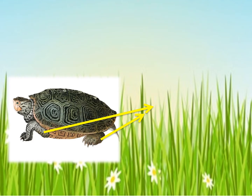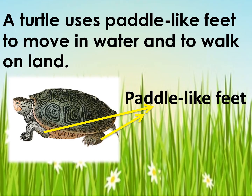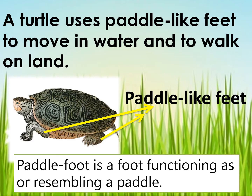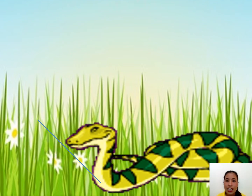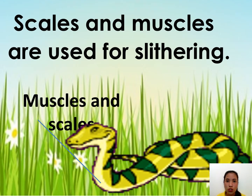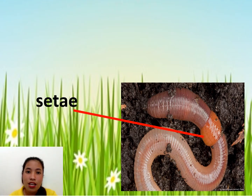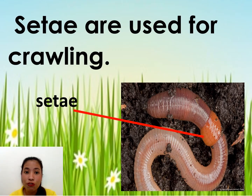What does the turtle use to move? A turtle uses its paddle-like feet to move in water and to walk on land. A paddle foot is a foot functioning as or resembling a paddle. Some animals have no legs but they can still move, just like the snake — it uses its scales and muscles to slither on land and swim in water. An earthworm doesn't have legs but it can move; it uses its setae that help anchor and control the worm when moving through soil or when crawling.